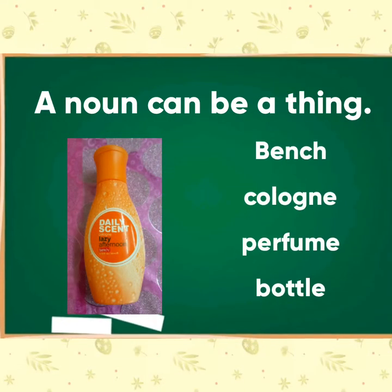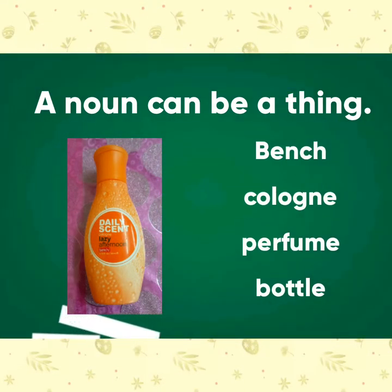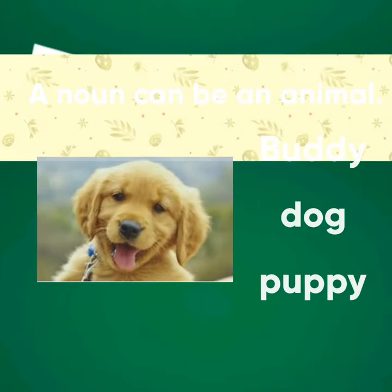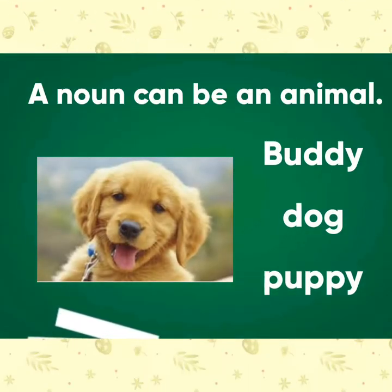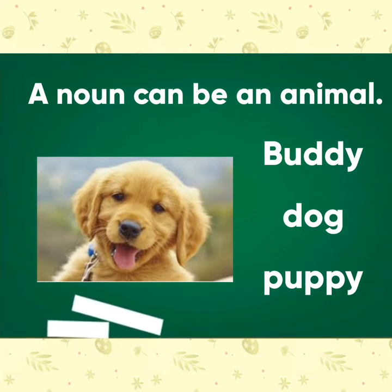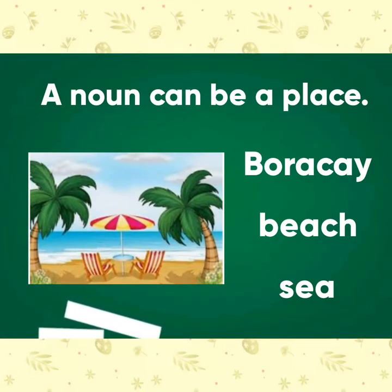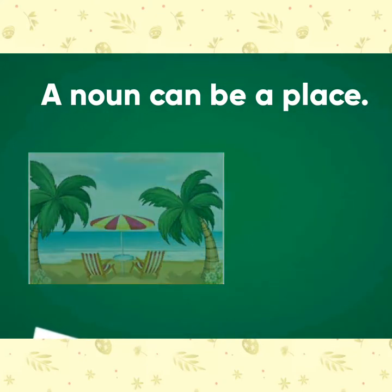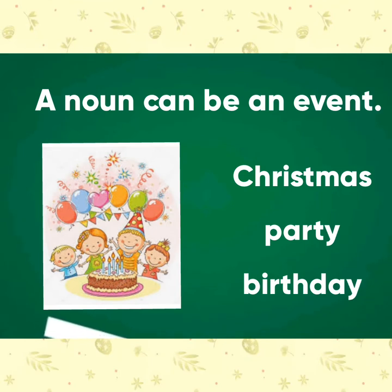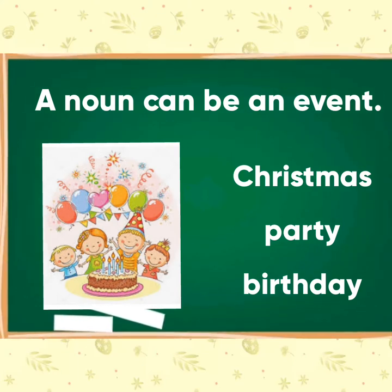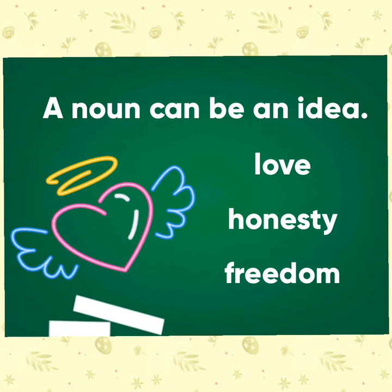A noun can be a thing — bench, cologne, perfume, bottle. A noun can be an animal — buddy, dog, puppy. A noun can be a place — Boracay, beach, sea. A noun can be an event — Christmas party, birthday. And a noun can be an idea — love, honesty, freedom.